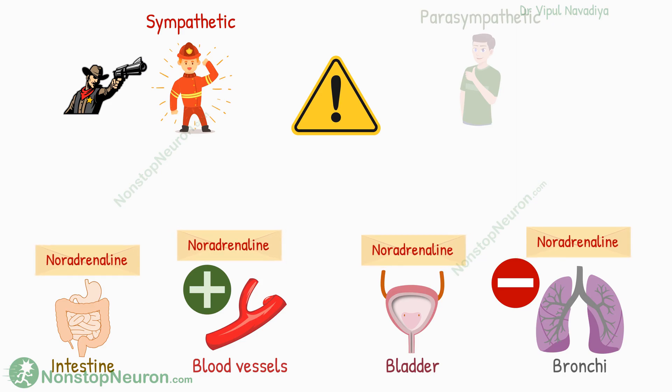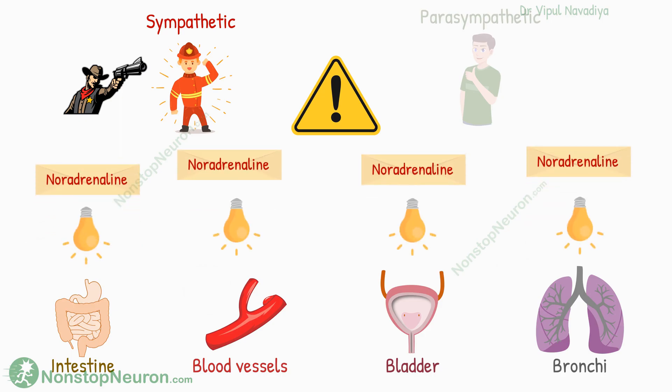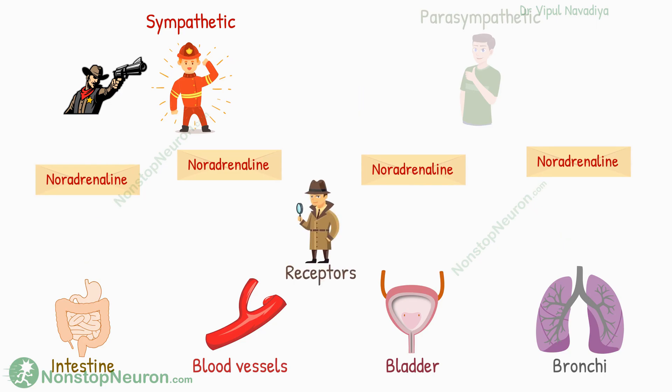The problem is that they all receive the same mail stating only one word. This message, although very important, is not enough for smooth muscles to take the right decision. It brings the news that the body is in an emergency situation, but it does not tell the muscle what exactly to do. So something in between the message and the muscle should add clarity regarding what should be done exactly. This clarity is added by the receptors.